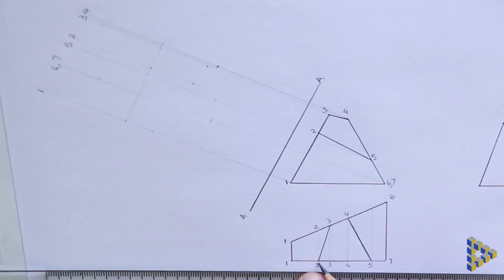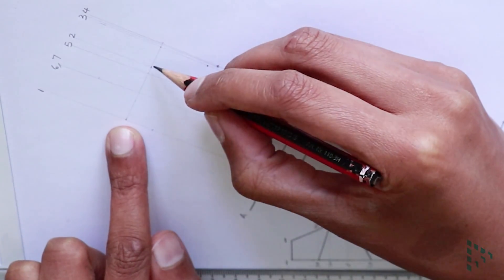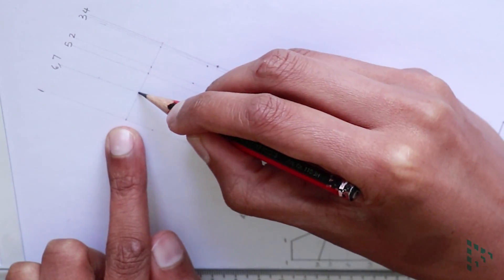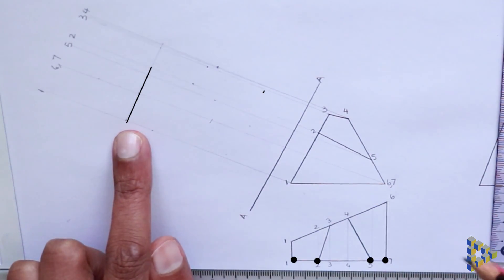To work out which points are connected, we look at our front and plan views. 1 is joined to the bottom of the edges 2, 5, and 7. Therefore, we can draw in a straight line from 1 to 5 to 7.